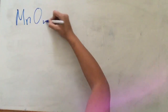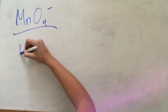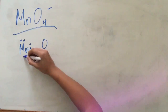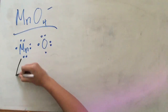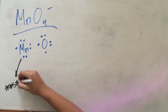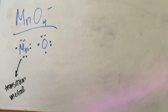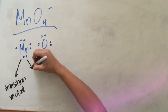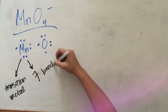Permanganate, or manganese oxygen 4 with a negative charge. Again, I'm going to start off by drawing the basic outline of manganese and oxygen. Manganese has 7 valence electrons and oxygen has 6. Because manganese is a transition metal, it's going to have special properties that affect the way that we calculate the bonds needed to satisfy this molecule. Manganese has 7 valence electrons, which means that there are 7 bonds needed to satisfy this molecule.